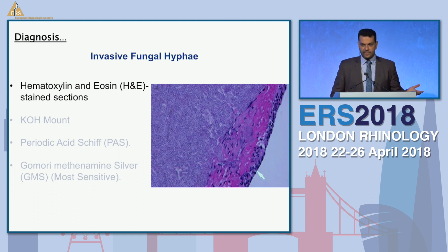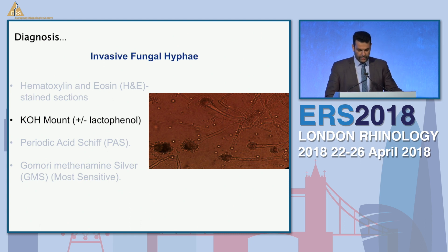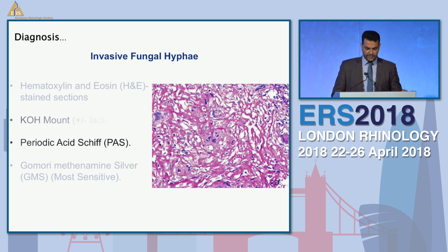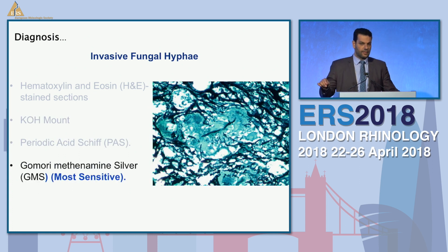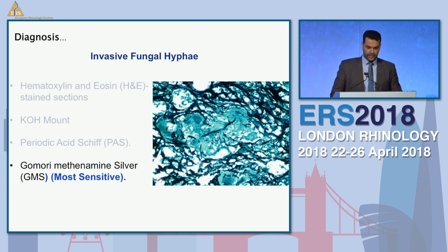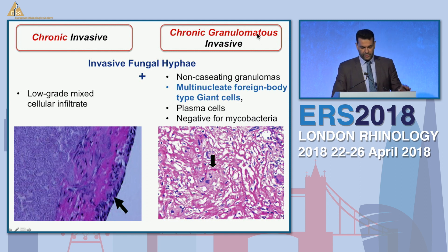The basic identification technique is H&E sections, but you can also use KOH — not very sensitive but helpful if available in your hospital lab. You also have PAS to identify the fungal. The most sensitive, however, is the silver stain. Try to communicate with your lab and make sure you have silver staining available to identify this with high sensitivity.